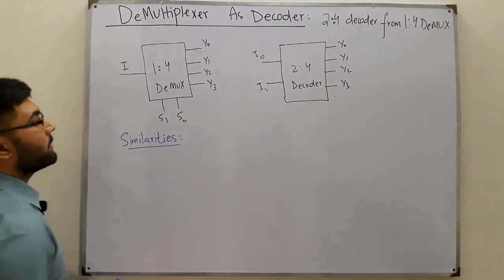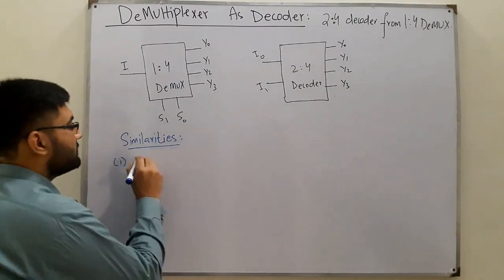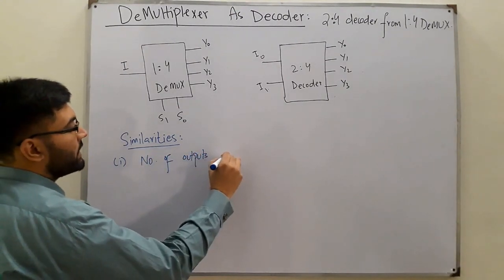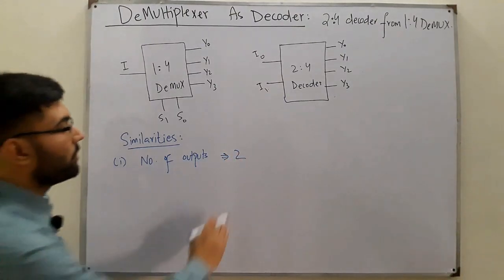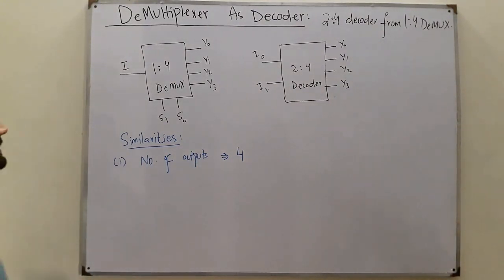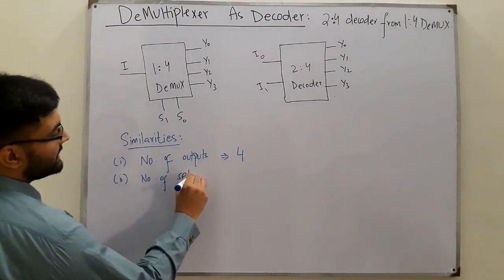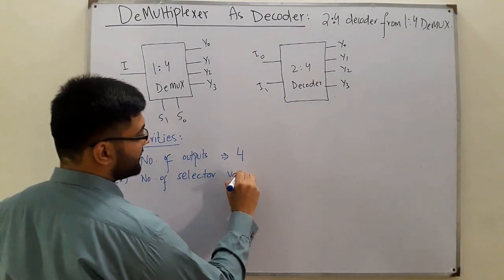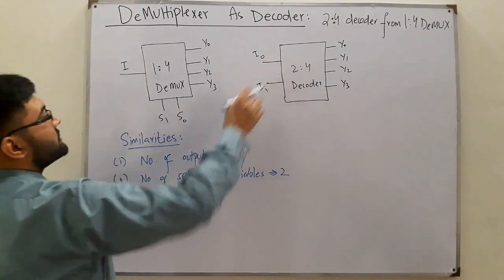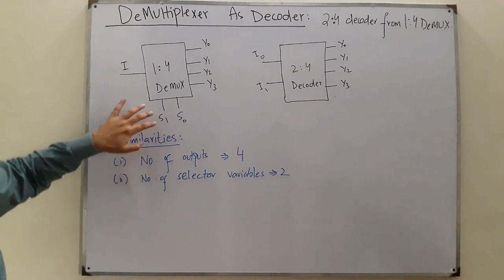What I see are a number of similarities. The first is the number of outputs—we have four in both cases. The next similarity is the number of select lines, or selector variables—in both cases, two. These are basically the selector variables; the output depends on these two.